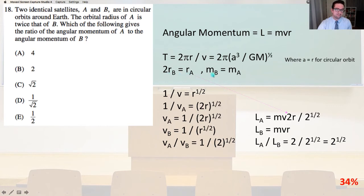So 1 over v is equal to the square root of r, and 1 over v of A equals the square root of 2r. So v of A is going to equal 1 over the square root of 2r, v of B is going to equal 1 over the square root of r, and v of A over v of B is going to equal 1 over the square root of 2.